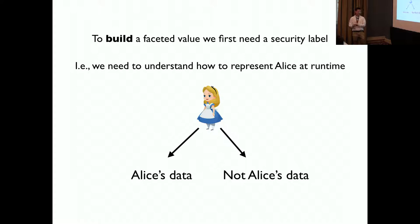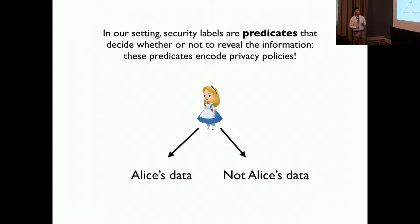To build a facet value, we first need a security label. So we need to understand how to represent Alice at runtime. In our setting, security labels are predicates that can decide whether or not to reveal the information. These predicates are like the policies, and they are intangible, like privacy policies.